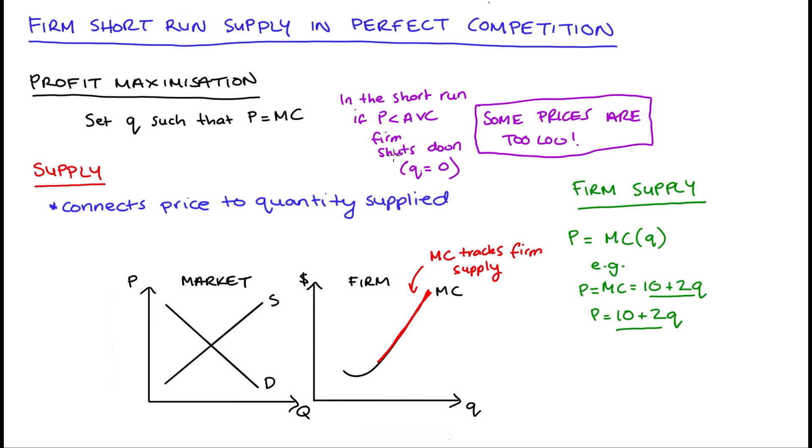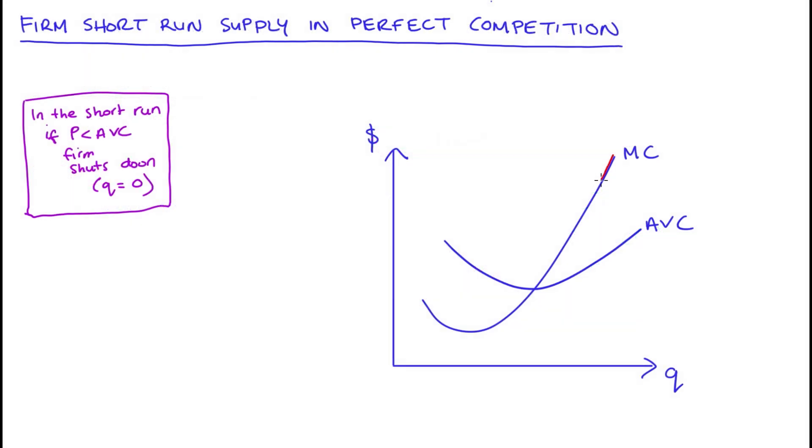Now, this all means that our firm supply diagram will actually look something like this in the short run. The firm supply will be equal to marginal costs, but only in this upper section here where our marginal cost is above or equal to average variable costs. So if the prices come through in this range,